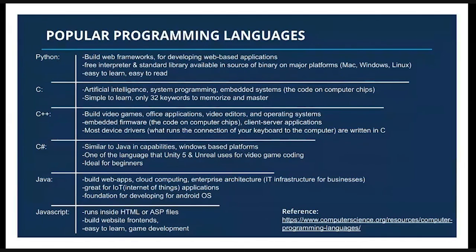Most device drivers — the software that runs the connection on your computer to computer peripherals — are written in C. C# is similar to Java in capabilities and it's good for Windows-based platforms. C# is one of the languages that Unity 5 and the Unreal game development engines use for coding video games or visualizations for simulations, and it's also ideal for beginners. Java is used to build web apps, cloud computing, enterprise architecture such as IT infrastructure for businesses, and is great for IoT or Internet of Things applications. IoT is often used for smart devices that need to connect to the internet to get data and make decisions with it — for example, a smart refrigerator that can order groceries for you. Java is also the foundation for developing for the Android operating system.